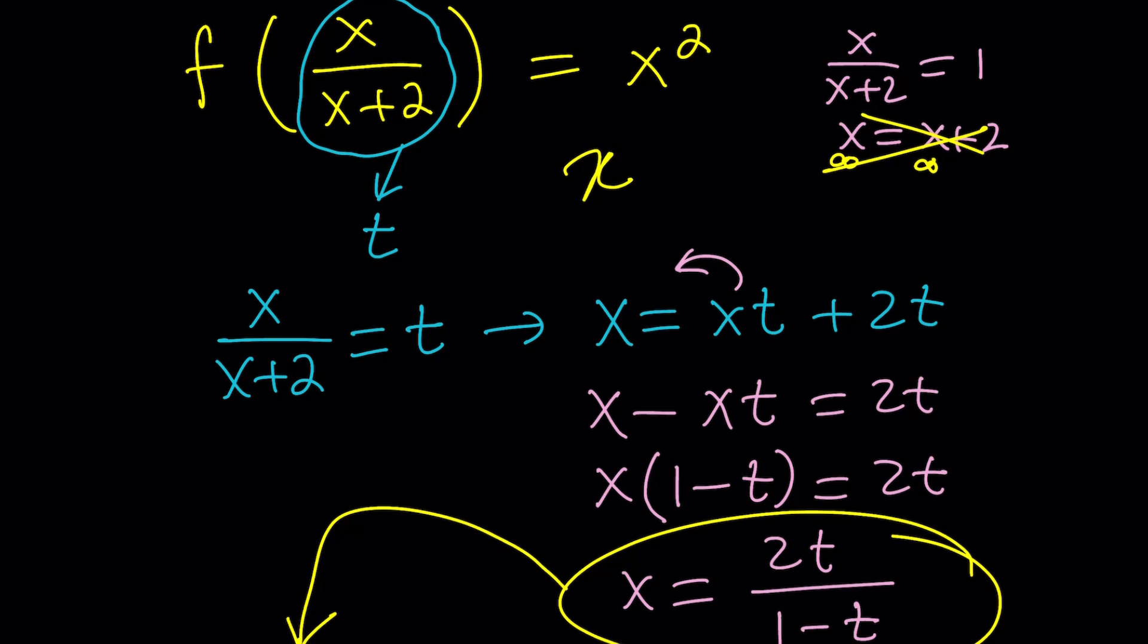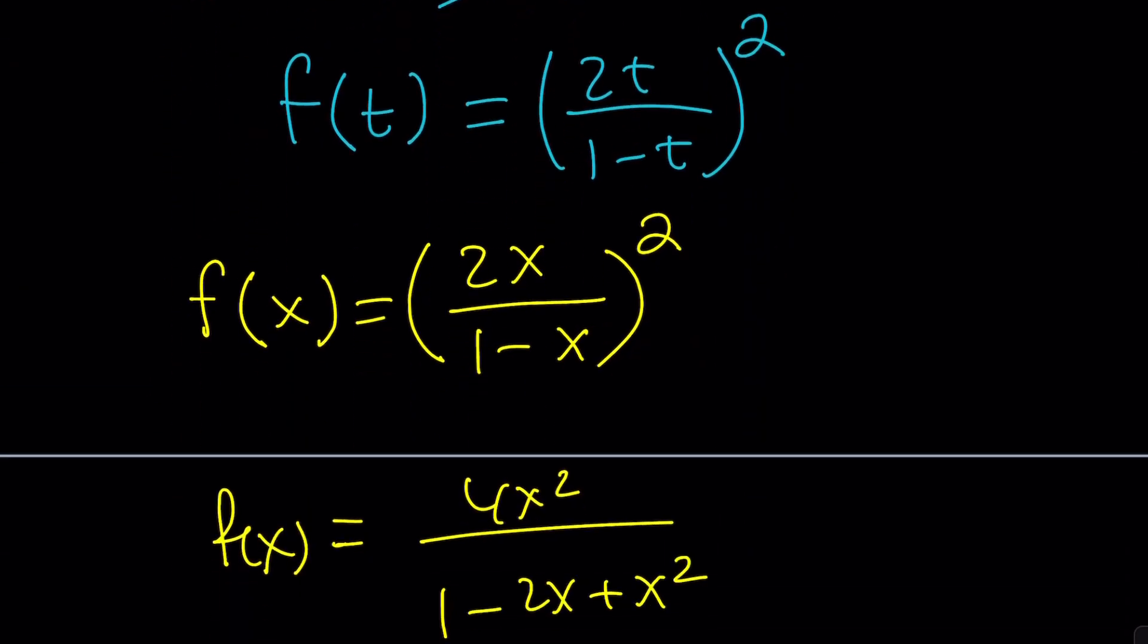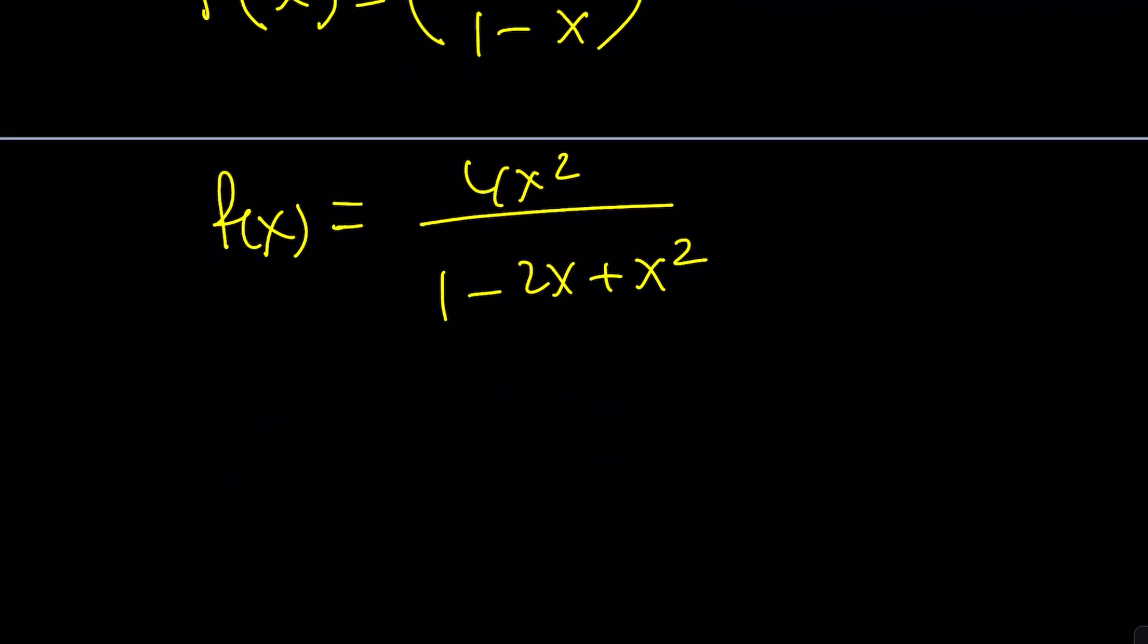And then we solve for x. Notice that we cross-multiplied, we isolated x, and then finally divided, and we got the answer by substitution. Okay, so far so good. Let's proceed with the second method.